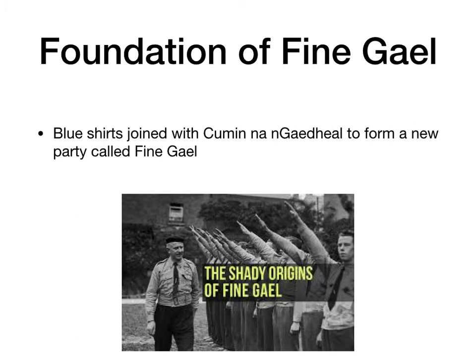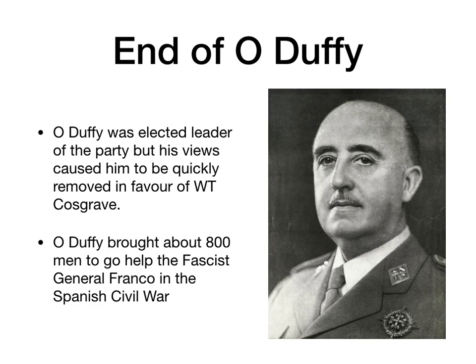After this, the Blue Shirts ended up joining Cumann na nGaedheal to form a new party called Fine Gael, or the Family of the Gaels, the Irish. A lot of people were shocked by de Valera's economic war with Britain and were attracted by these anti-democratic ideas. However, O'Duffy was originally elected as leader of the party, but his anti-democratic and fascist views caused him to be very quickly removed and replaced by W.T. Cosgrave, who had been the leader of the Free State prior to Fianna Fáil taking power.